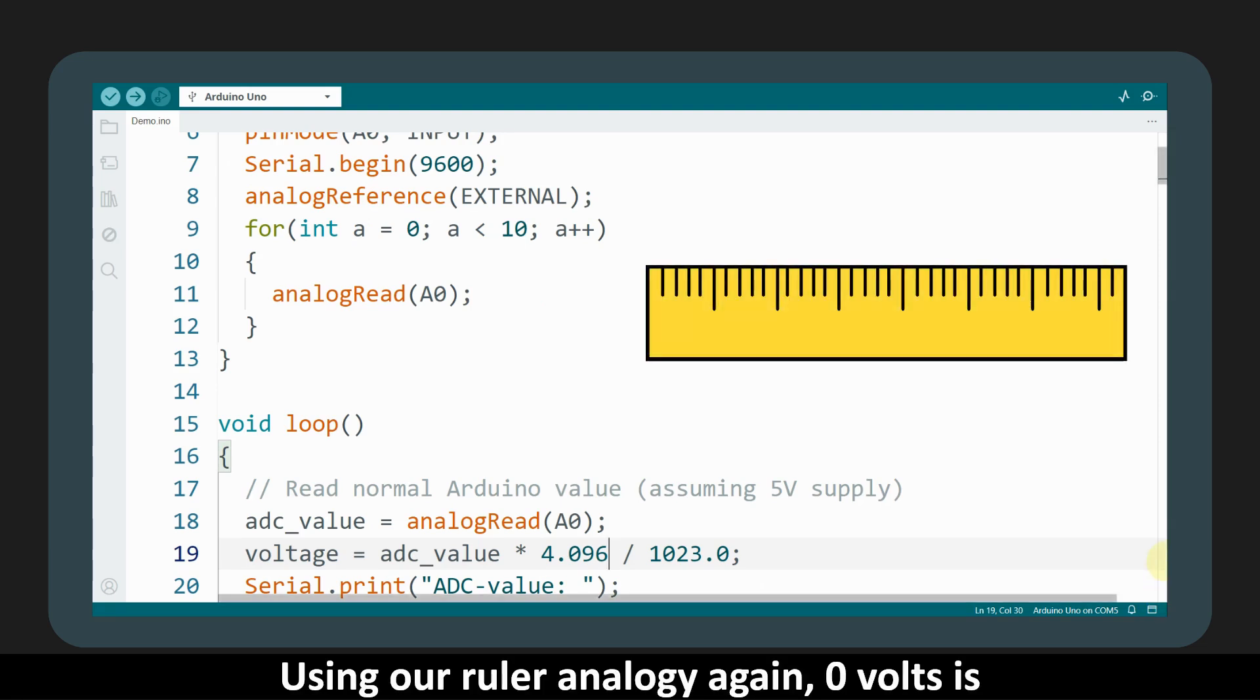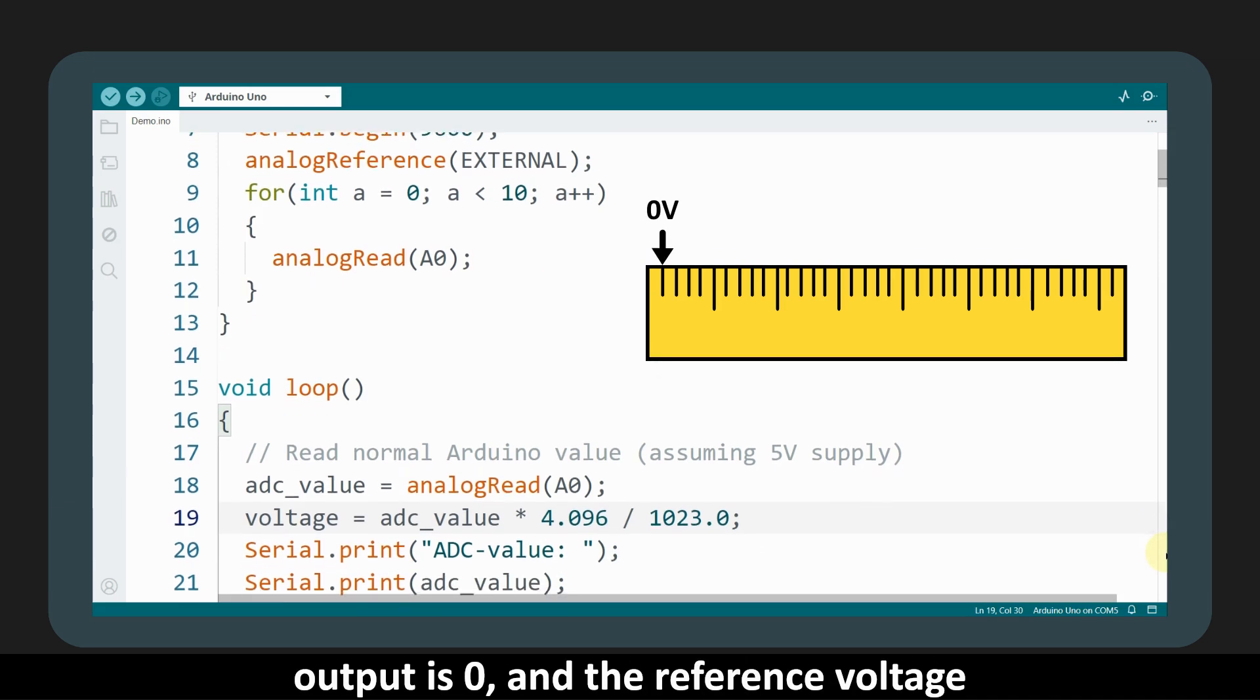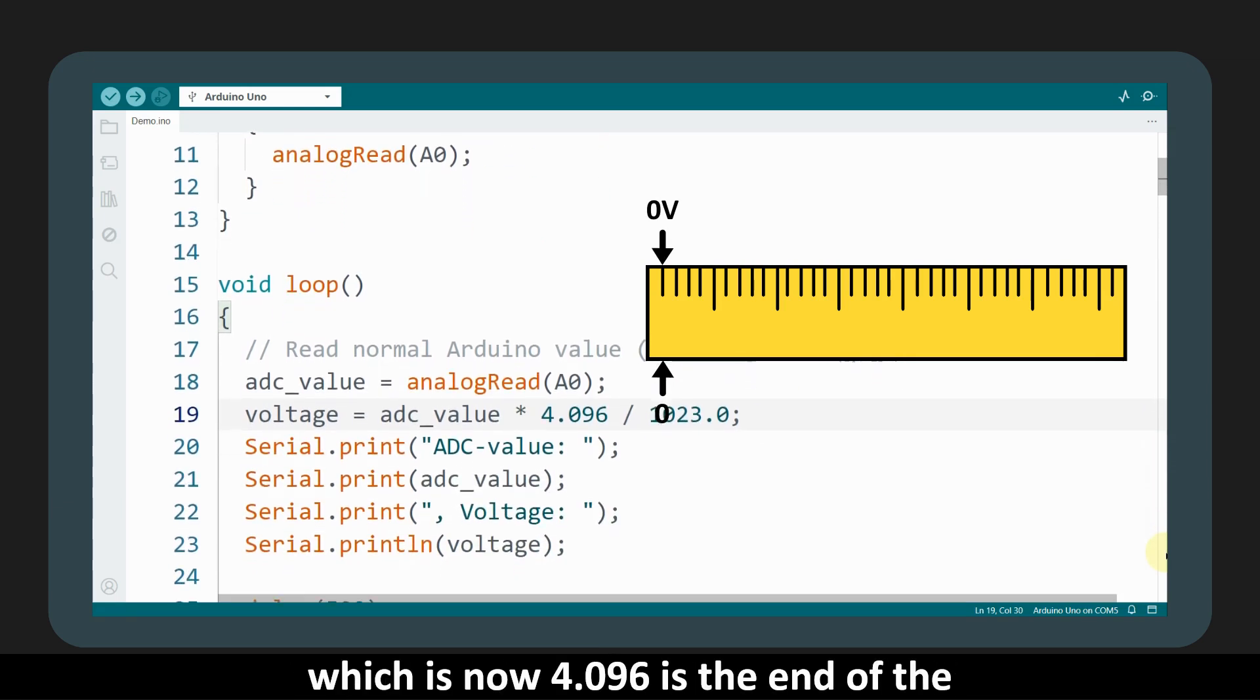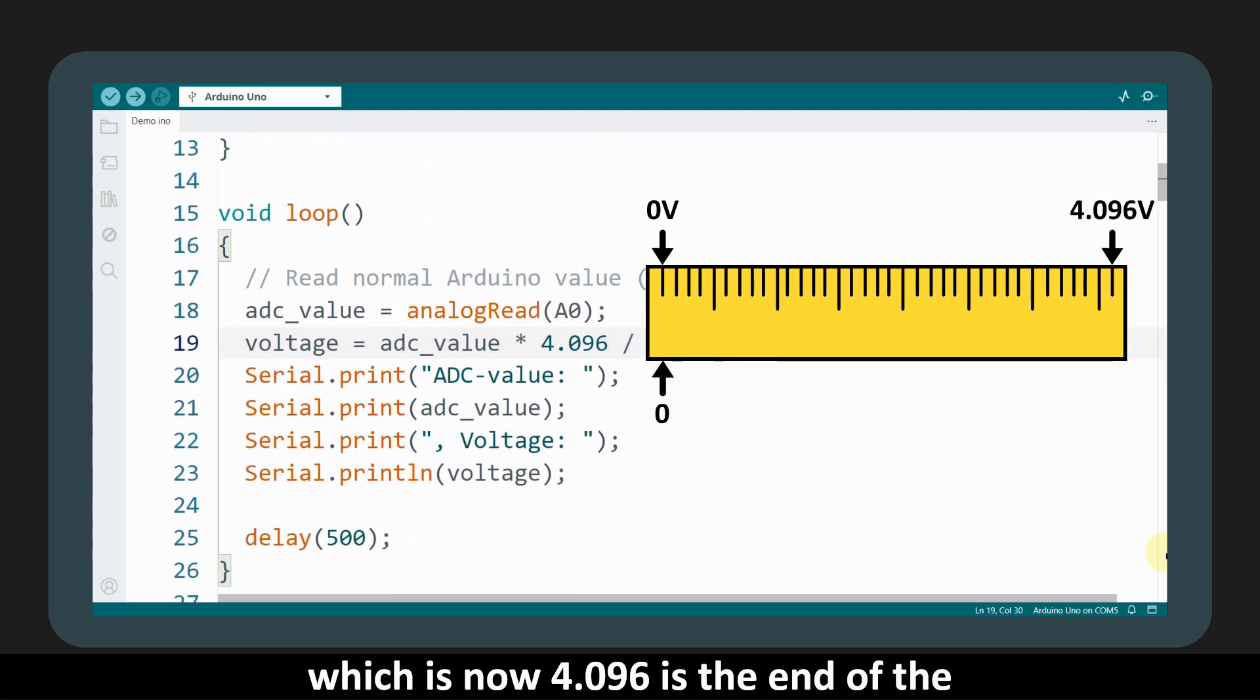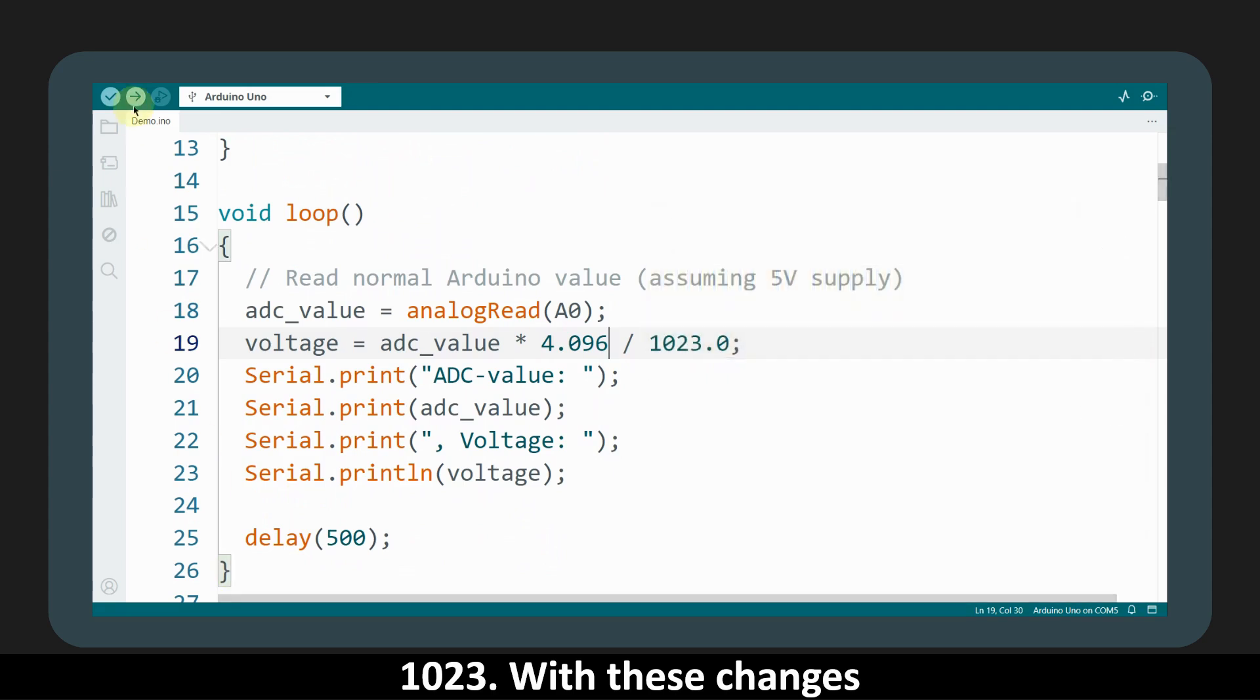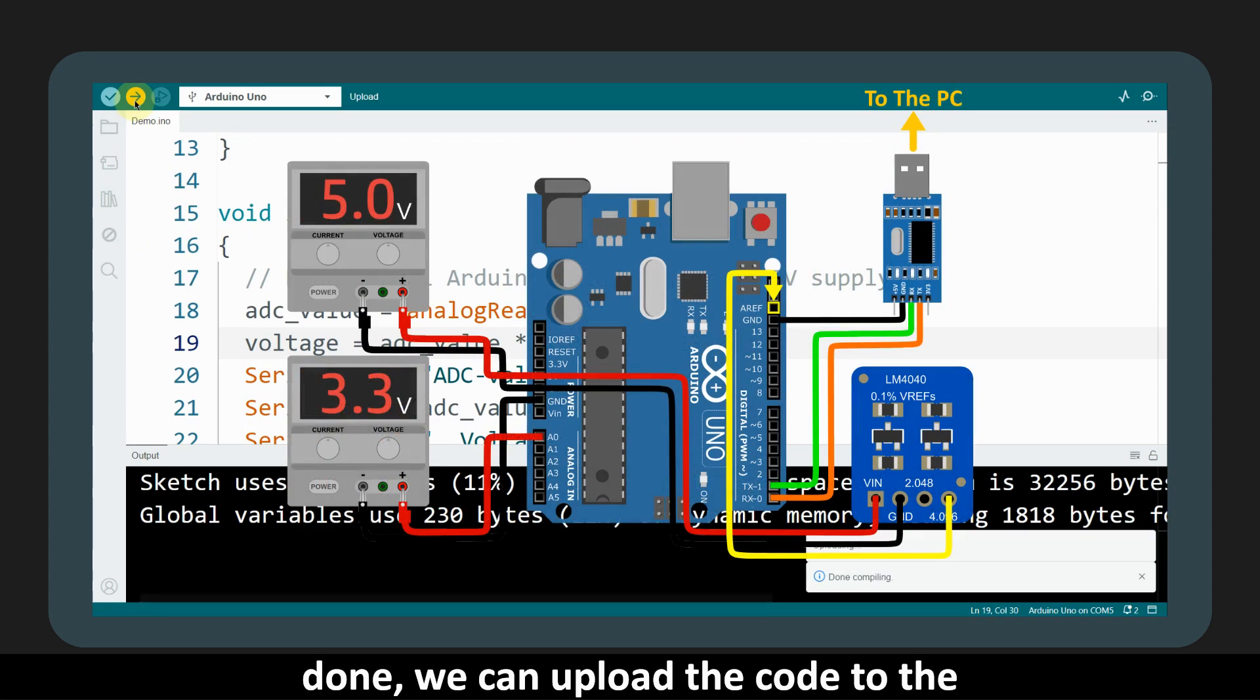Using our ruler analogy again, 0 volts is the start of the ruler, at which the ADC output is 0, and the reference voltage, which is now 4.096, is the end of the ruler, at which the ADC output is 1023. With these changes done, we can upload the code to the Arduino.